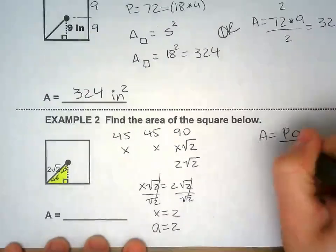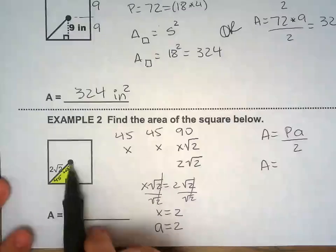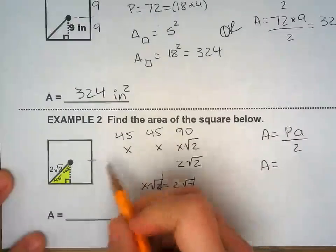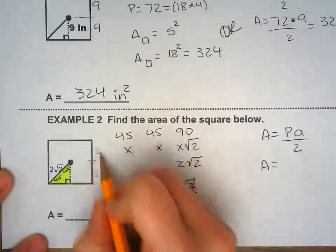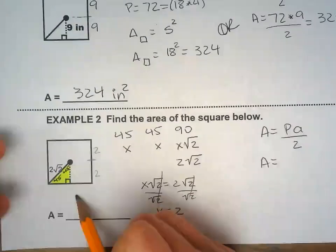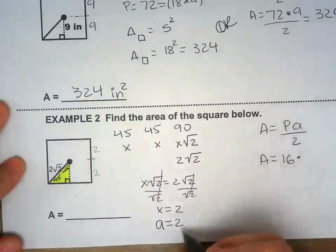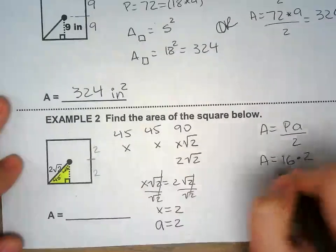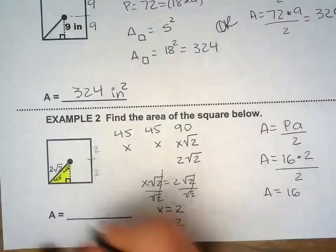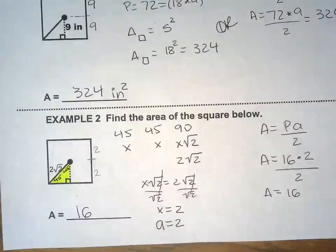So, to find the area, we do the perimeter times the apothem divided by 2. Now that I know the apothem is 2, remember the apothem is half the side? This side is 4. For me to find the perimeter, it's 4, 4, 4, 4. Perimeter 16, times the apothem 2, divide by 2 formula, you get 16. That's all I got for you.